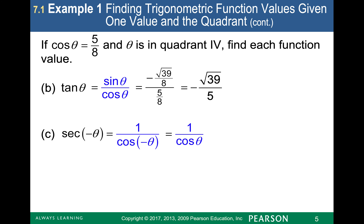If I want to find secant of negative theta, that is the fundamental identity 1 over cosine of negative theta, which gives me 1 over cosine theta. Copy down the fundamental identities in blue onto a formula sheet you'll keep for this chapter. Then I can replace it with 1 divided by 5 eighths, multiply by the reciprocal 8 over 5, and 1 times 8 over 5 is just 8 over 5.